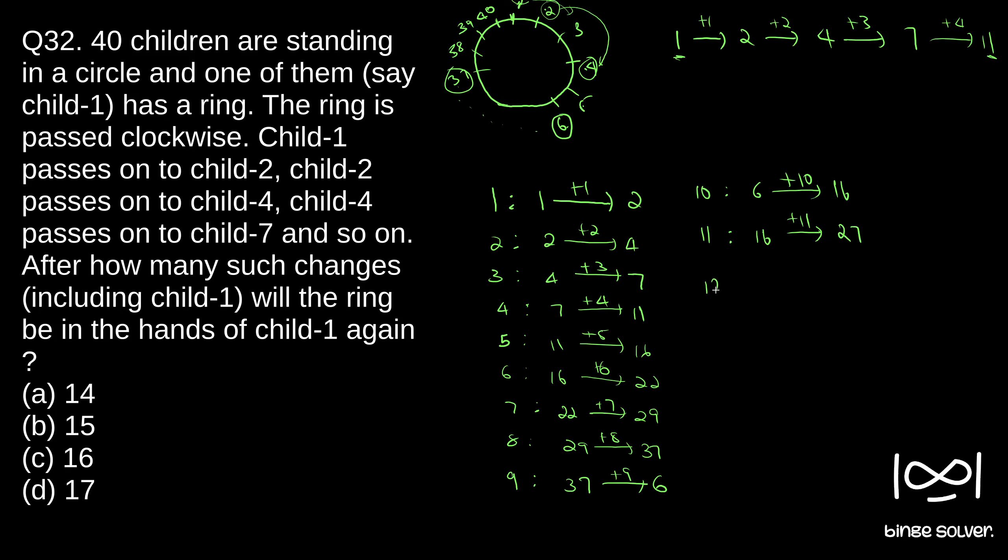12th pass, 27 plus 12 gives 39, which plus 13 is 52, but we will write 12, 40 plus 12, so 12th person gets it. 14th pass, 12 plus 14 is 26. So 15th pass, 26 plus 15 is 41. So instead of 41 we will get 1.